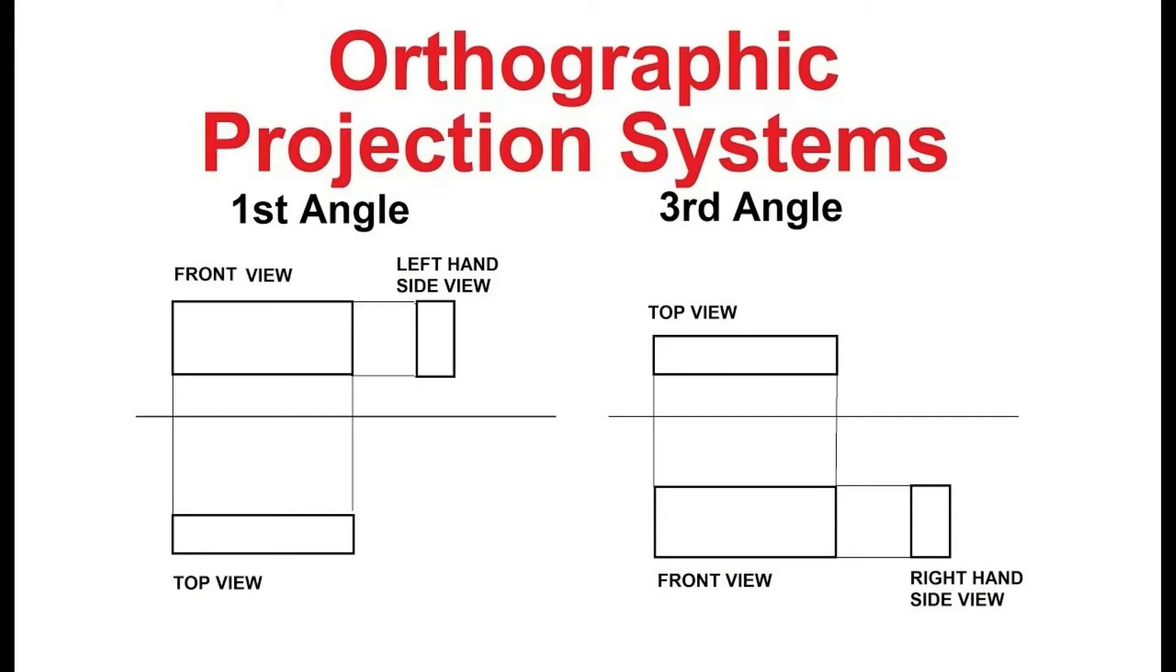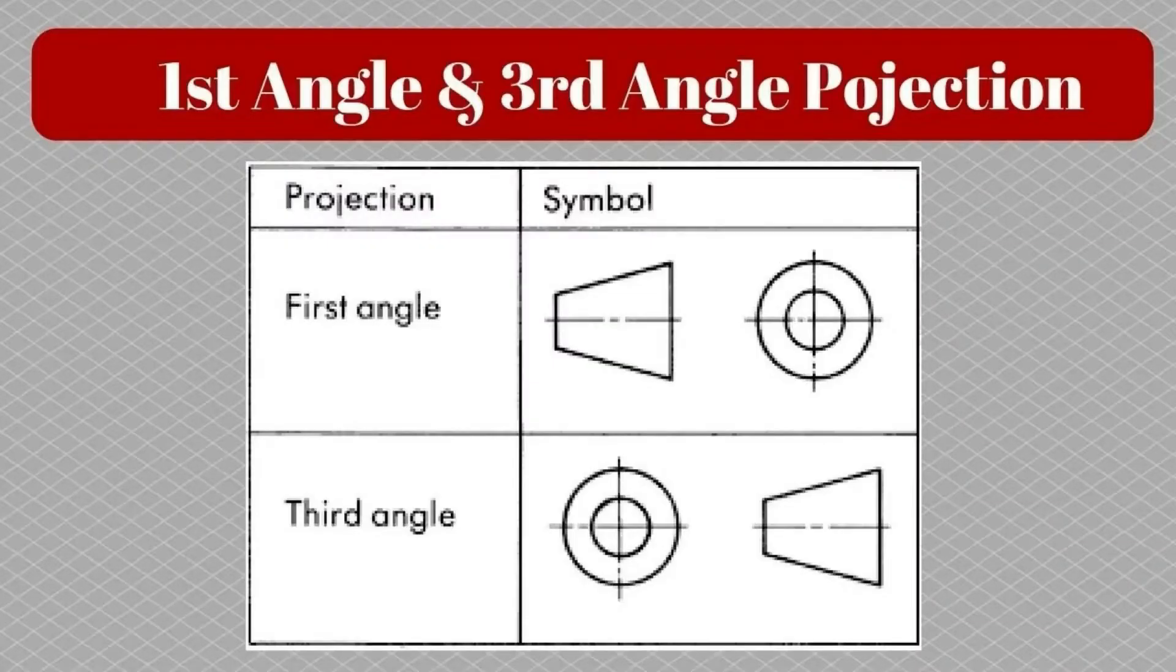Here is an example of how third angle orthographic projection would be drawn. And here is an example of how first angle orthographic projection would be drawn. Here are the symbols for both first angle and third angle orthographic projection.